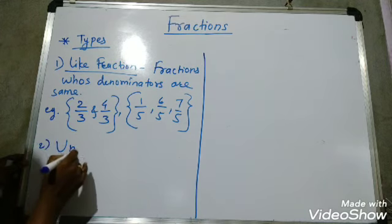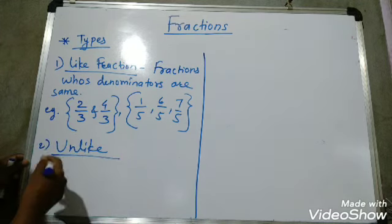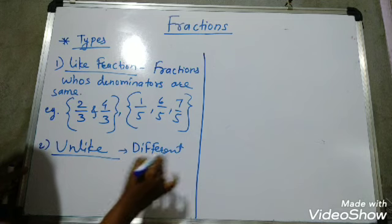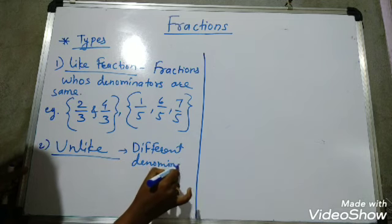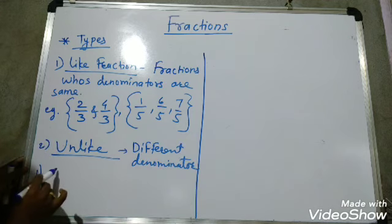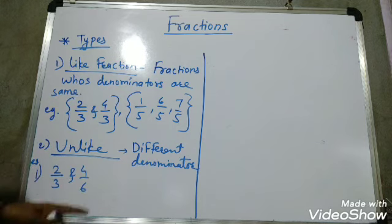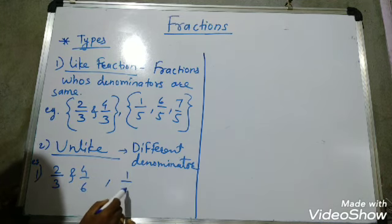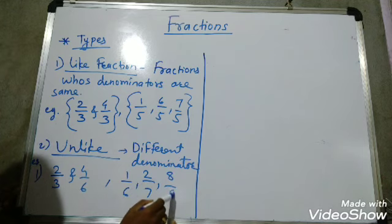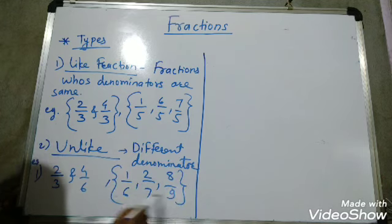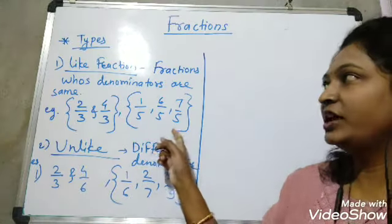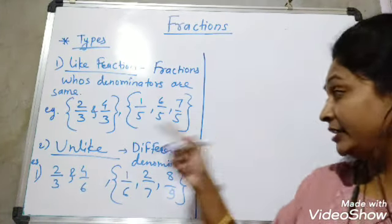And unlike fractions — the word itself gives the answer. Unlike fractions are those whose denominators are NOT the same; they have different denominators. For example: 2 by 3 and 4 by 6 have different denominators 3 and 6. Or 1 upon 6, 2 upon 7, 8 upon 9 — these are unlike fractions because their denominators are all different.